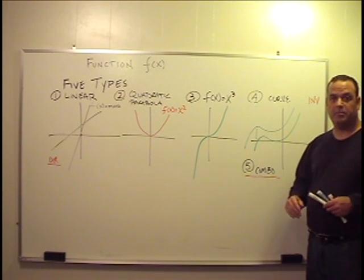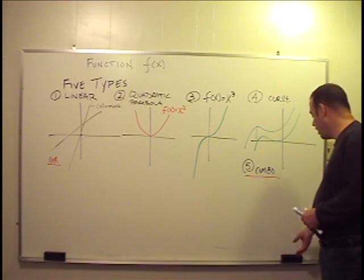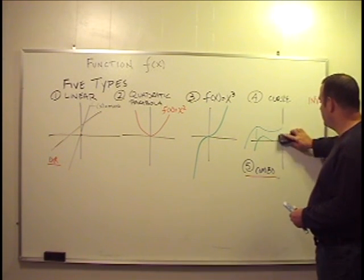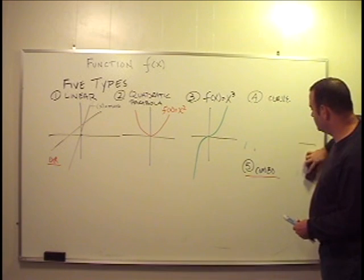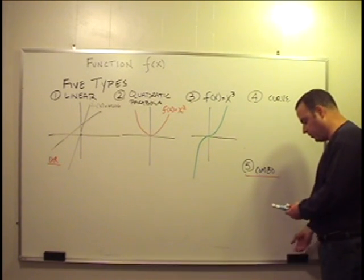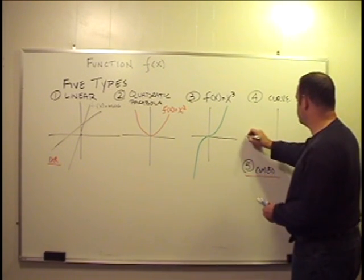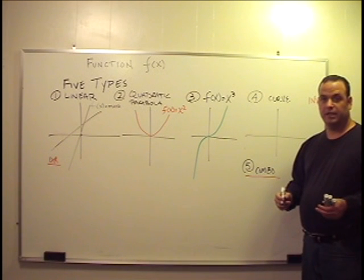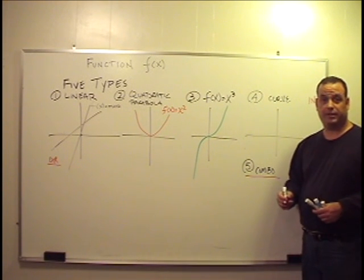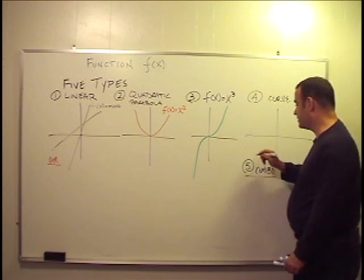Lastly, is the combination. The combination is some range for x where there's a bunch of curves or lines put together that have no rhyme or reason. And typically you have to evaluate the values on the graph itself.